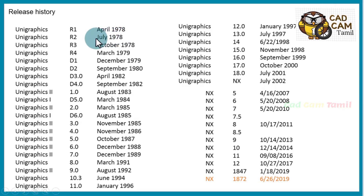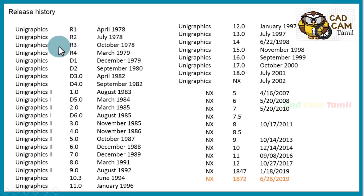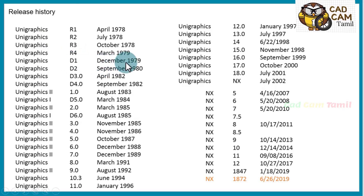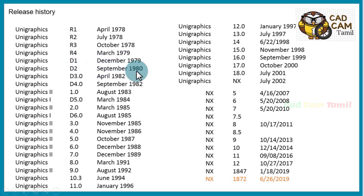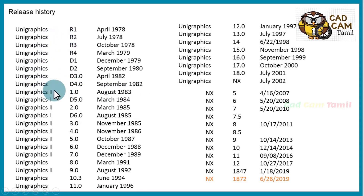The first release was in April 1978, followed by a second release in July 1978. R4 was then released, followed by versions D1, D2 in 1998, D3.0 in 1982, and D5.4. These are the early old versions of the software.